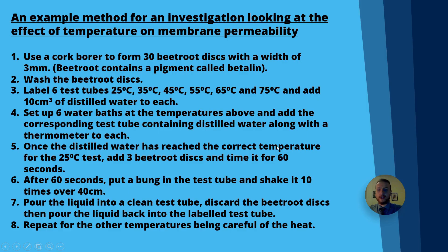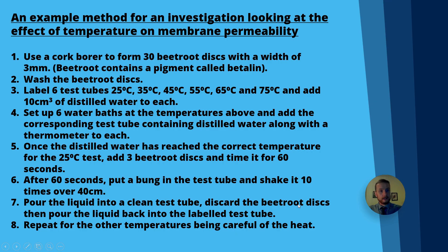Once the distilled water has reached the correct temperature for the 25-degree test, add three beetroot discs and time it for 60 seconds. After 60 seconds, put a bung in the test tube and shake it 10 times over 40 centimeters — keep that consistent to control that variable. Pour the liquid into a clean test tube, discard the beetroot discs, then pour the purple liquid back into the labeled test tube and keep it in your rack.